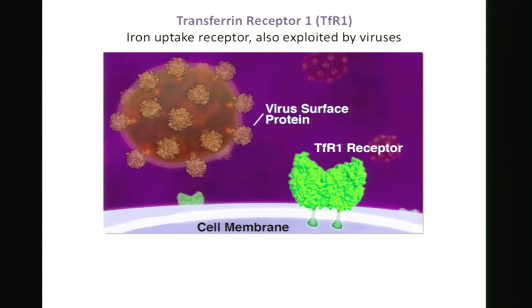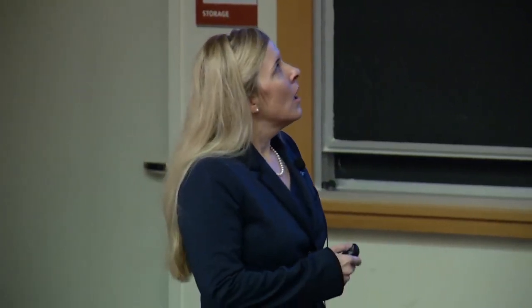My lab has been developing a new model for studying host range involving a molecule called the transferrin receptor. This receptor is expressed at the cell surface, encoded by all mammalian genomes. Its normal job is to bind iron-loaded transferrin in your blood and uptake iron into the cell — it regulates iron homeostasis. Interestingly, this receptor is also exploited by several different viruses, which contact it and trigger their own uptake into the cell.